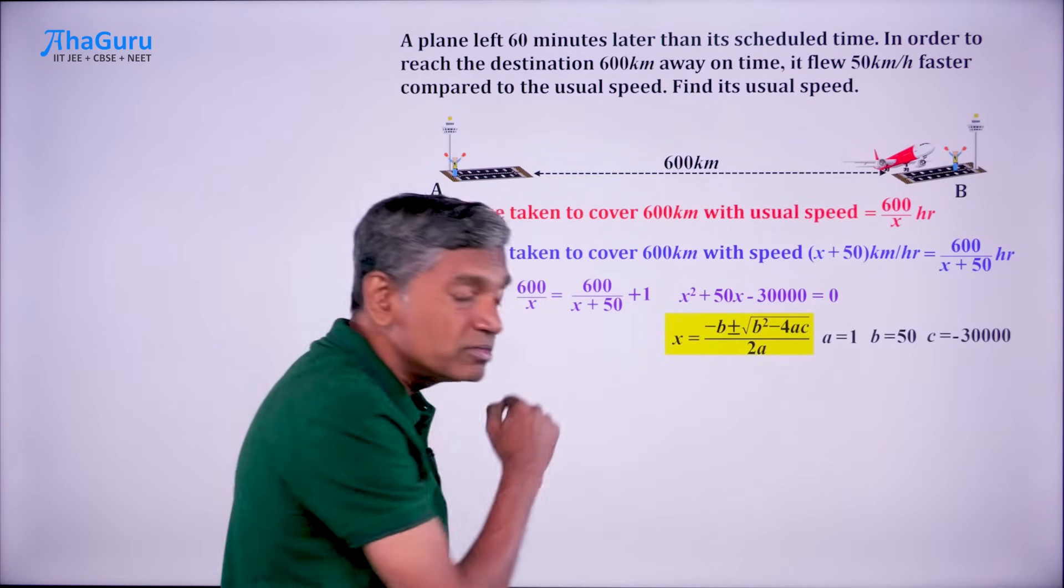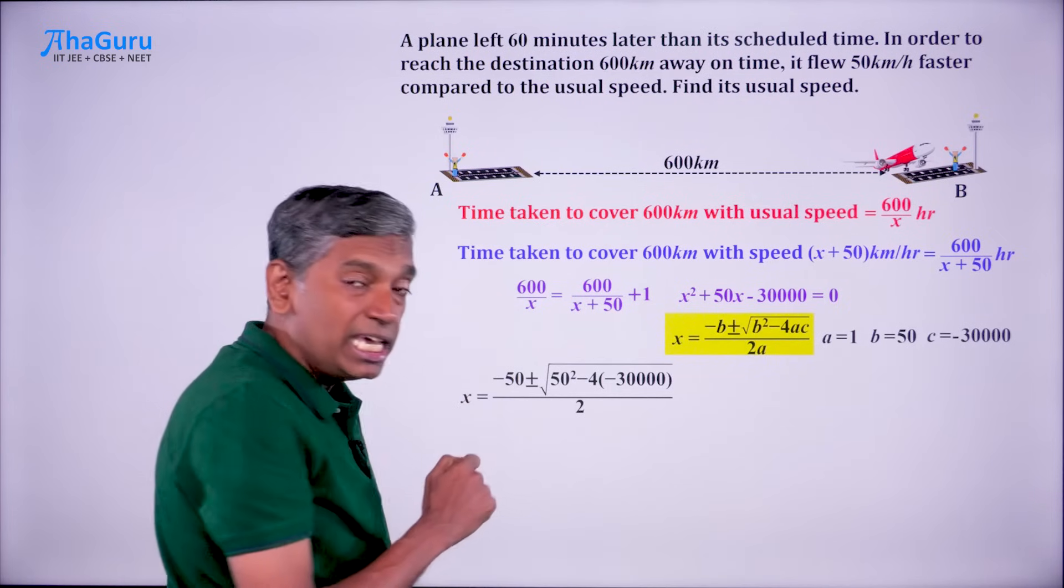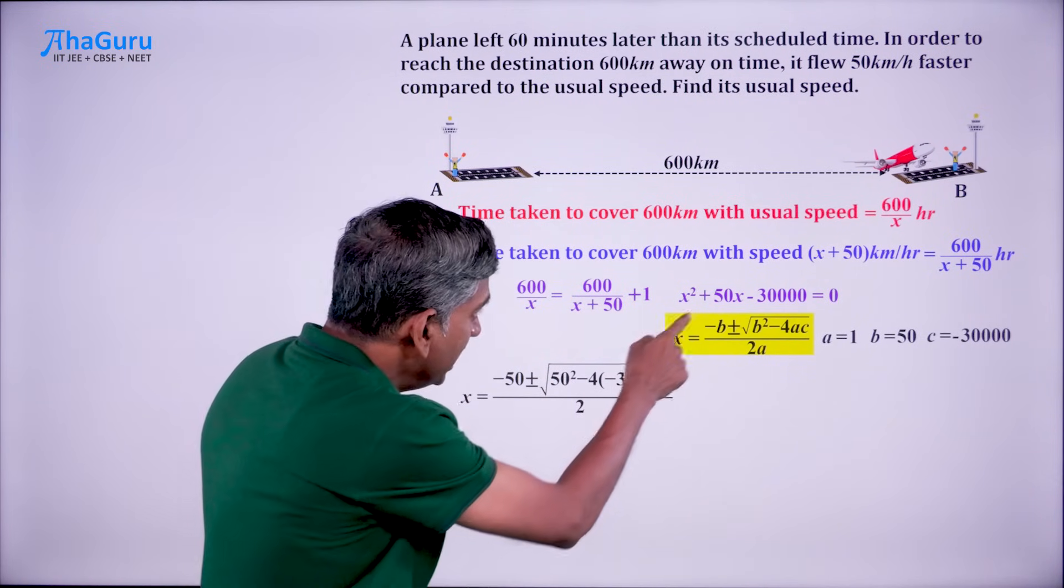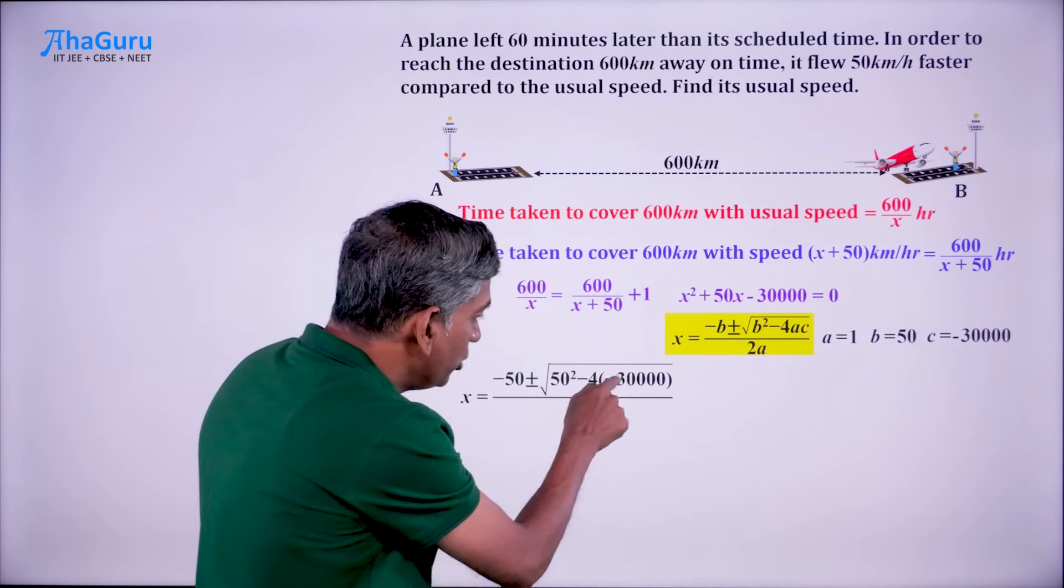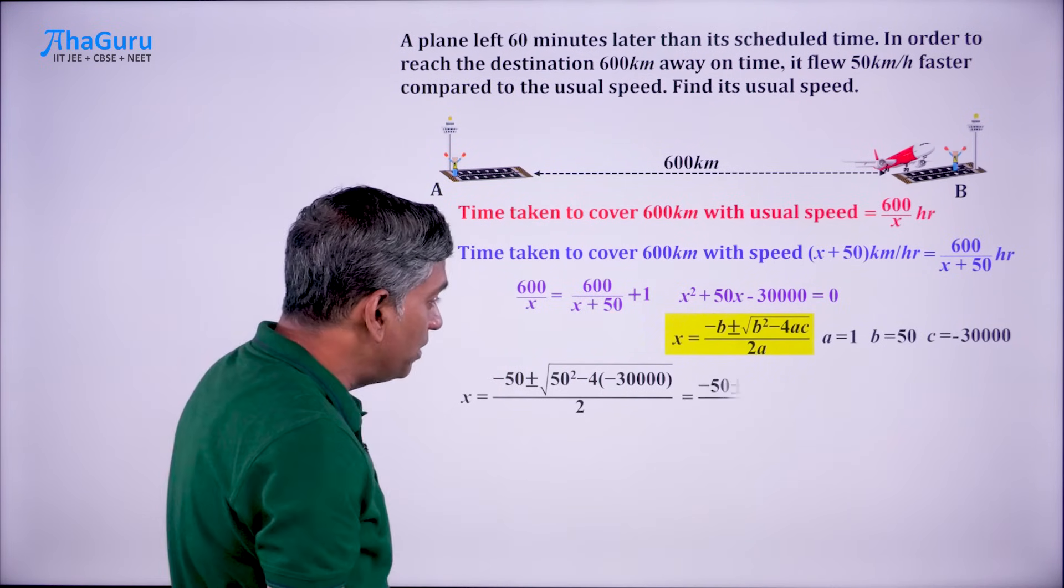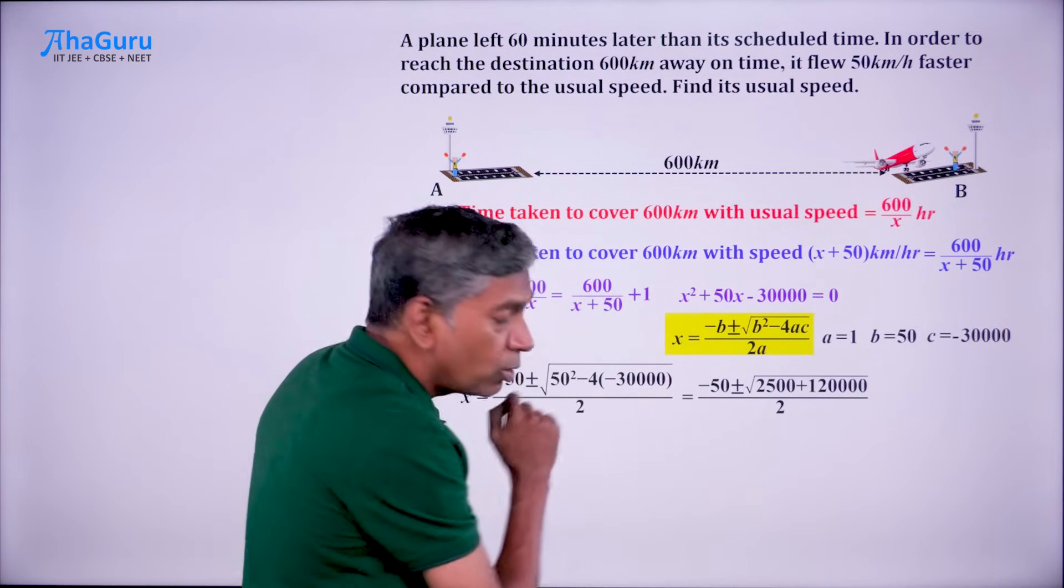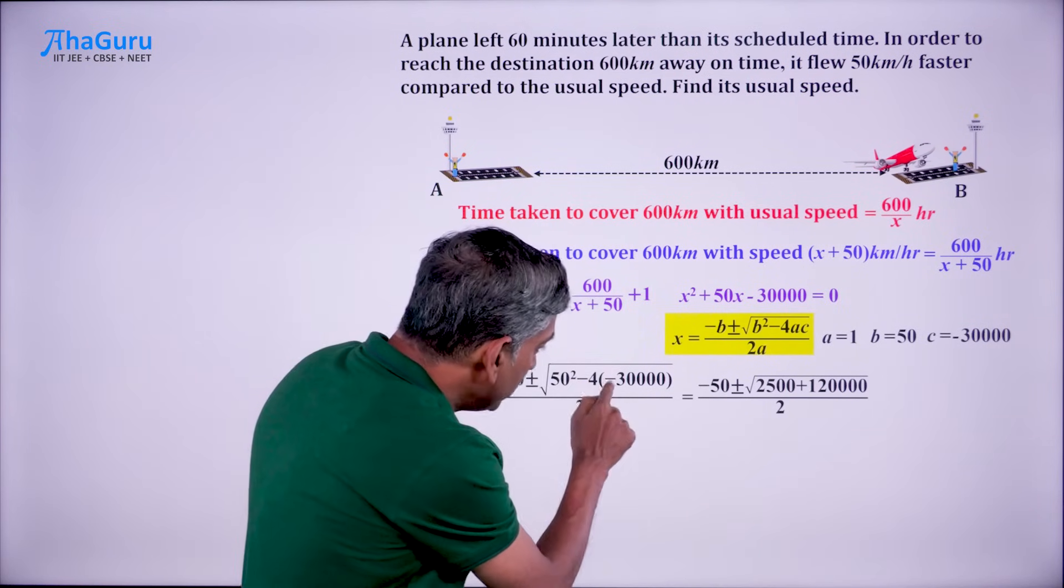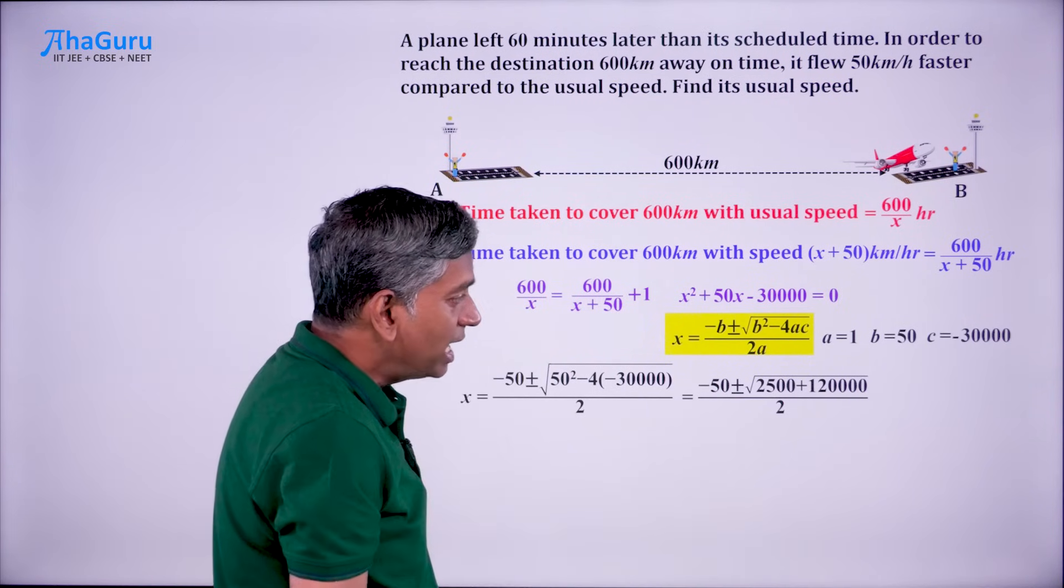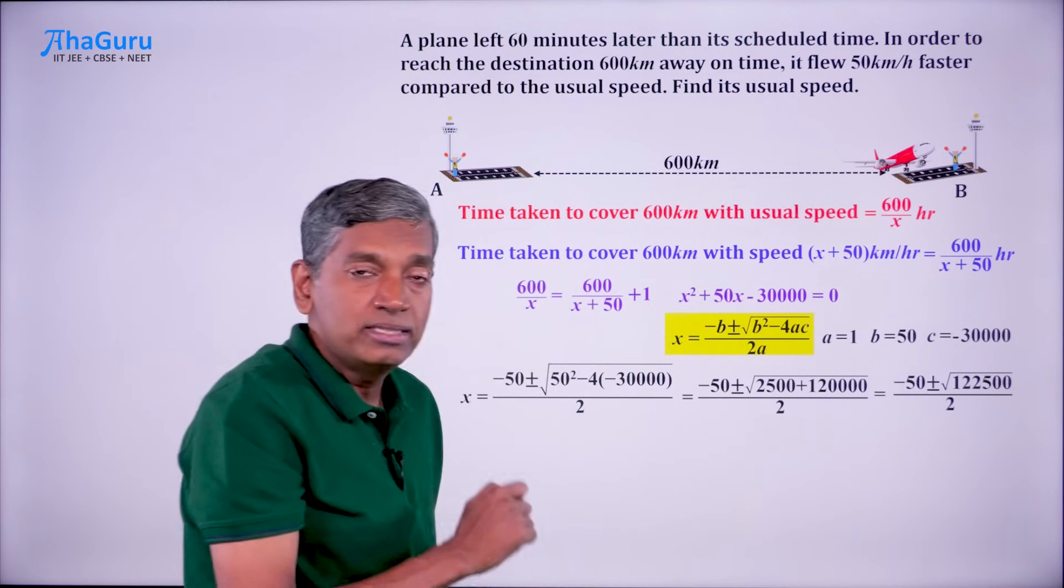Let us plug in these values and we will get x equals minus 50 plus or minus root 50 square minus 4 into 1 into minus 30,000, the whole divided by 2. If you simplify, you get inside the root 50 square is 2,500, minus 4 into minus 30,000 is plus 120,000. This simplifies to root of 122,500.